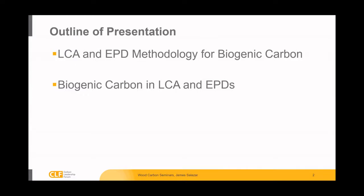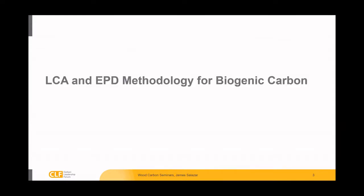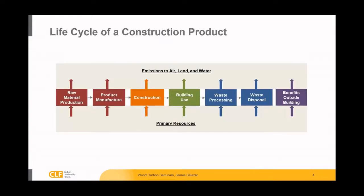Then I'd like to go quickly through a real-world example of the biogenic carbon accounting for a lumber LCA as it pertains to an environmental product declaration. On the methodology for biogenic carbon, I'd first like to start with the life cycle of a construction product. The life cycle of a construction product, particularly as it pertains to ISO standards, starts with the raw material production — the extraction of raw materials from nature.